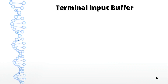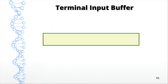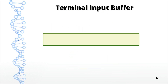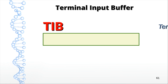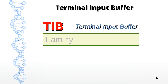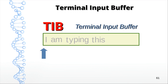For that, I have to introduce you to a chunk of memory that is vital in this process. It's called the TIB, which stands for Terminal Input Buffer. Every Forth has one. Its purpose is to store anything you type from the terminal. There's also a pointer — initially it's pointing to the beginning of the TIB. The value of this pointer is stored in a variable called IN.